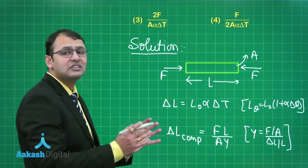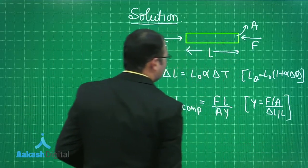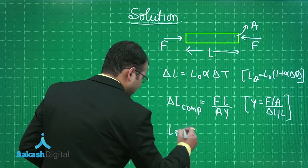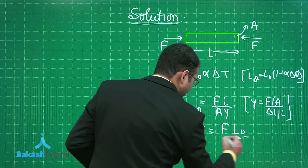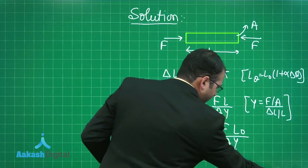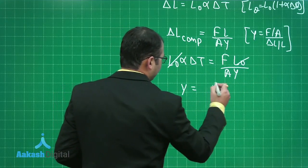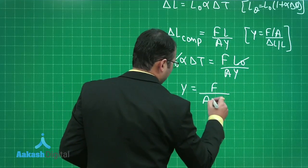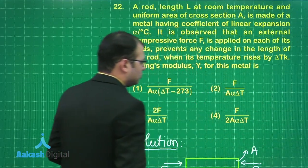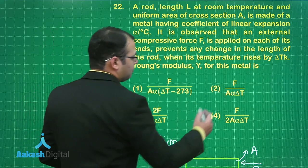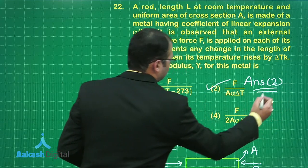I will write L₀αΔT equals FL₀/AY. Solving this, L₀ and L₀ will be cancelled. Y will be F upon AαΔT. Let's see which is the best suited answer for this. Y would be equals to F upon AαΔT. Option number 2. Hope you have understood this one.